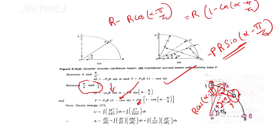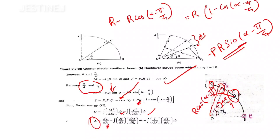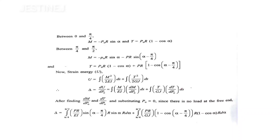The strain energy is given by: U = ∫M²/(2EI)·ds + ∫T²/(2GJ)·ds. By Castigliano's theorem, the deflection δ = dU/dP₀ = ∫(M/EI)·(dM/dP₀)·ds + ∫(T/GJ)·(dT/dP₀)·ds. Taking the derivative with respect to P₀, the factor of 2 cancels, giving this simplified equation.